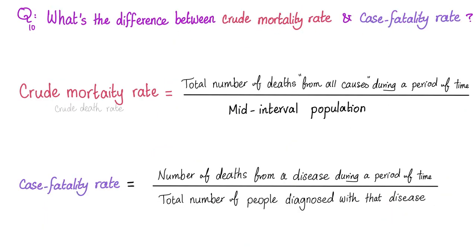What's the difference between mortality rate and case fatality rate? The term 'mortality rate' is vague. The crude mortality rate (or crude death rate) is the number of deaths from all causes during a period of time over the mid-interval population — it has nothing to do with a specific virus. However, if you're talking about viruses and infections, you likely mean the case fatality rate: the number of deaths from a disease during a period of time — in this case COVID-19 — over the total number of people who have COVID-19. And of course, when the denominator increases more than the numerator, the ratio goes down.